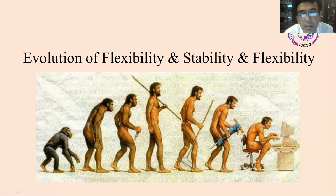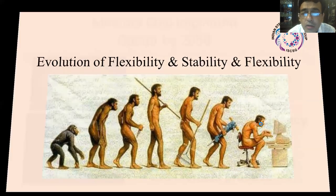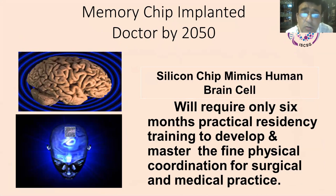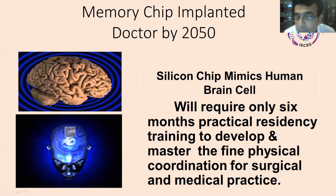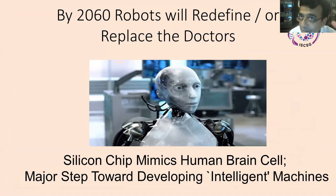We can see the evolution — this is a picture present in many textbooks. The evolution of man into a state of stability is now moving to flexibility, and by 2020 this flexibility is more on the digital level; we are here on Zoom, for example. We need to reach a deeper level about what we can do. By 2050, we would be having memory chips implanted, and because there will be so much surgical and medical skill, these chips would be taking care of us. Practical residency of maybe six months would be good for learning coordination for surgical and medical practice. By 2060, we could have robots also coming into it.